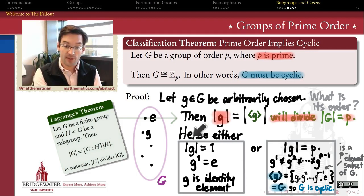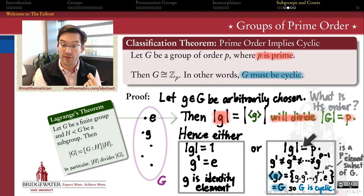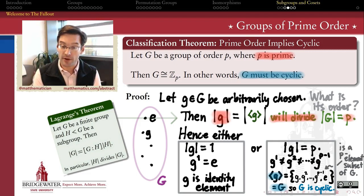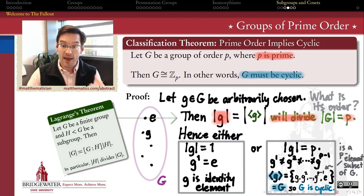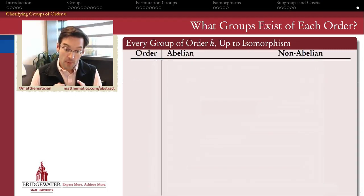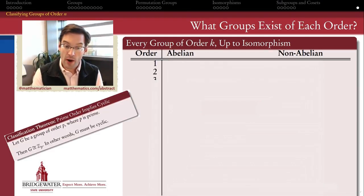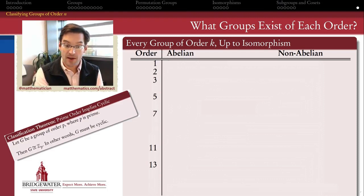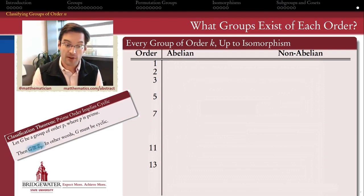Because this shows that as long as there is a non-identity element in this group, there must be an element of order P, which is therefore a generator for this group. It proves this group is cyclic and therefore isomorphic to the additive group of integers mod P. For every prime number you give me, I can tell you any group that has that order is going to be isomorphic to Z mod P.